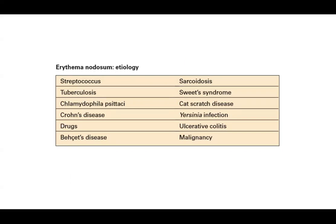The etiology of erythema nodosum can include multiple things — similar to how vasculitis has multiple causes. These include infectious, auto-inflammatory, inflammatory bowel disease, drugs, malignancy, and many times it's idiopathic. This is just a list of more common etiologies; you'll have to correlate clinically, and oftentimes we're left saying it's erythema nodosum while looking for the exact cause.